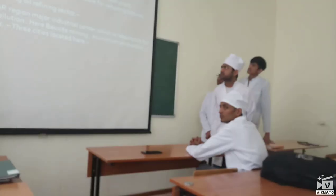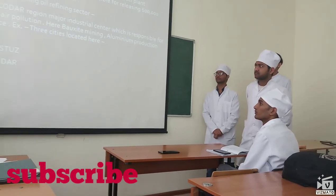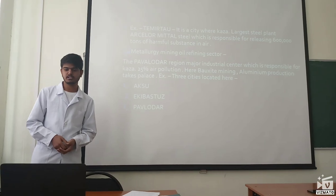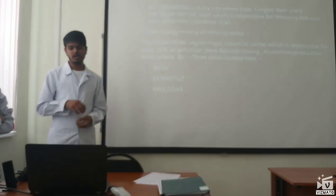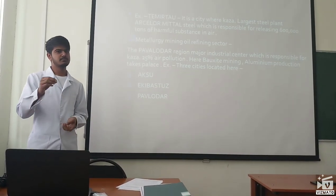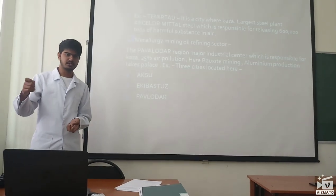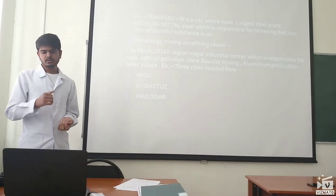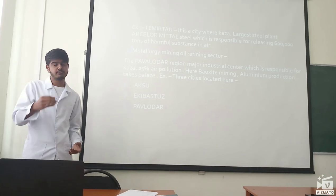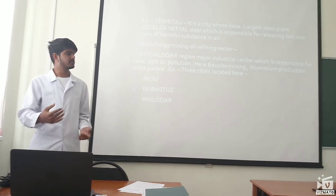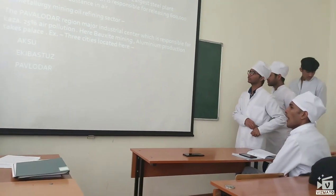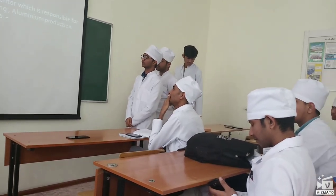For example, Timurtham is the largest state-producing industry. It produces about 6 tons of dark pollutants in the air. The harmful pollutants are a mixture of tiny molecules present in the exhaust of the industry's air. In the metallurgy, mining and refining sector, Tevalator is an industrial center which is responsible for 25% of air pollution in Kazakhstan, where bauxite mining and aluminium production take place. Some example cities are Aksur, Ekibastus and Karagandha.